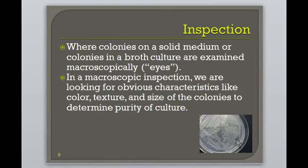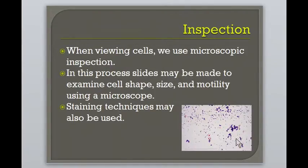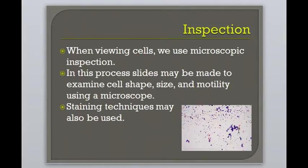When a culture appears macroscopically to contain only the specimens desired, we then must inspect microscopically. In a microscopic inspection, we often fix a sample of specimen onto a glass slide and stain it for better viewing. We view the cells under high magnification using a microscope. One is able to distinguish cell shape, size, and other morphological characteristics, which help determine the purity of the culture as well as help identify the specimen. This specimen has been prepared using a gram staining technique. As you can see, we have two distinct bacteria: one which is spherical in shape and stains purple, and the other which is rod-shaped and stains pink. One can use this information to help determine if the sample needs to be further isolated, as well as learn more about the identity of the two bacteria.